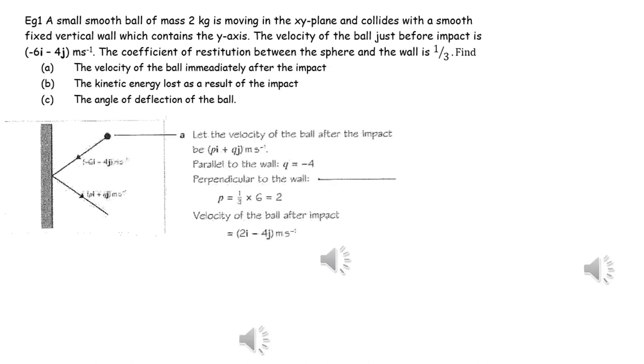Parallel to the surface we can apply conservation of linear momentum, and therefore the J components before and after will be equal, and that's why Q equals negative 4. Perpendicular to the surface we can apply Newton's experimental law, and therefore we can compare the I coefficients and use E as separation speed over approach speed, and that then gives us the velocity of the ball after impact.